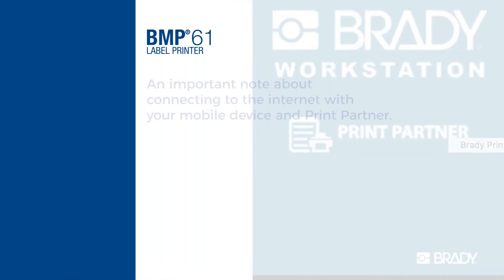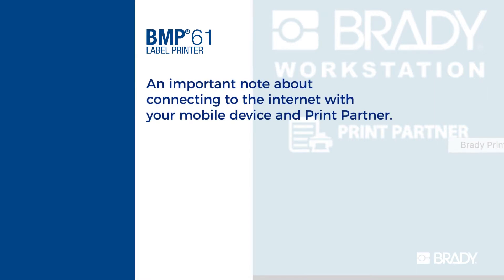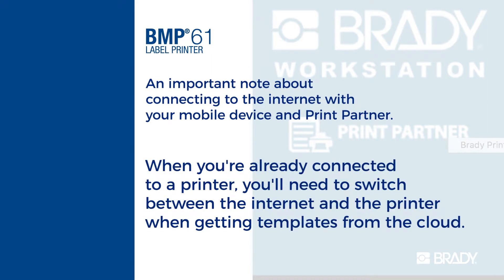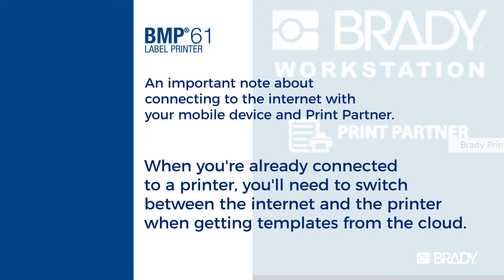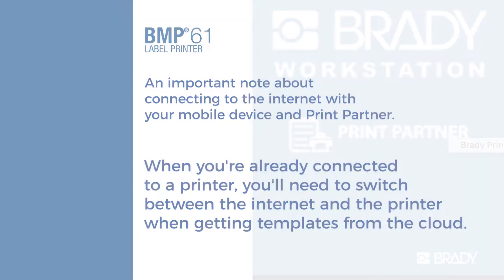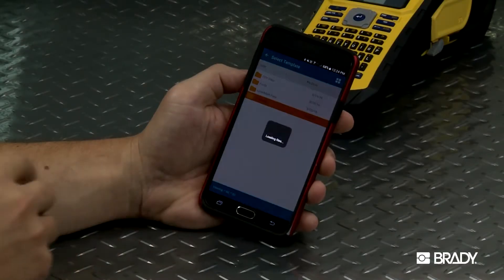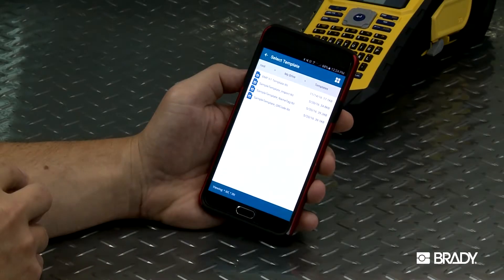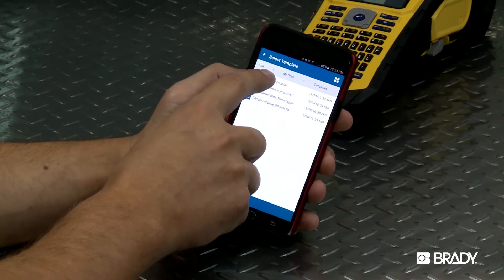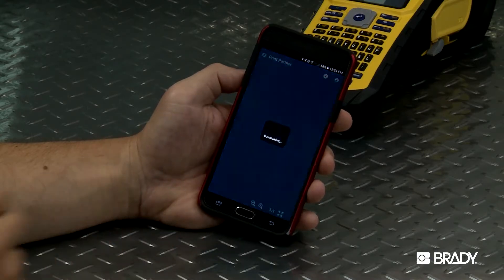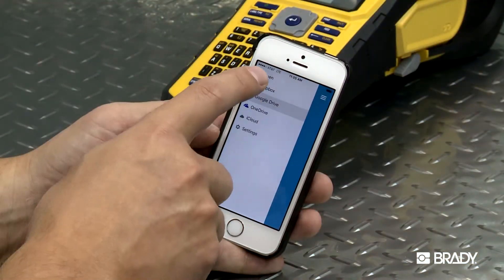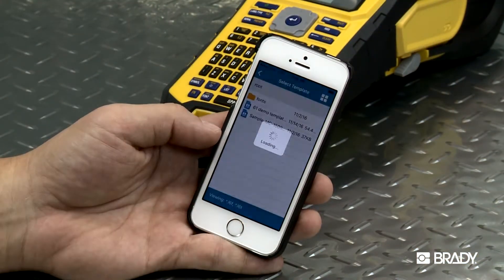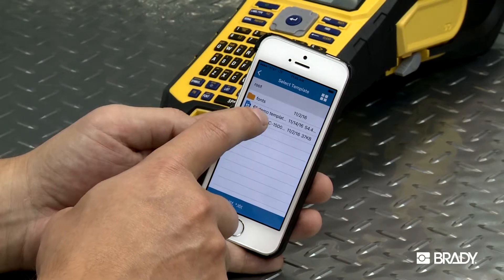An important note about connecting to the internet with your mobile device and Print Partner: when you're already connected to a printer, you'll need to switch between the internet and the printer when getting templates from the cloud. When using an Android device, the app will take care of this for you and switch back and forth as needed. When using an Apple device, you'll need to change your connection back and forth manually. The pencil icon will let you manage your connection to the print screen.